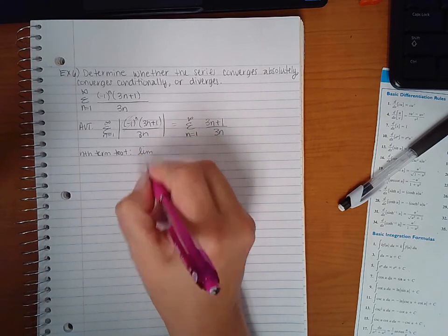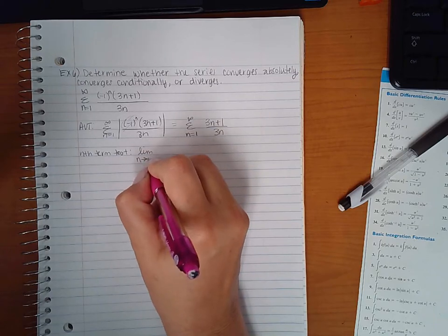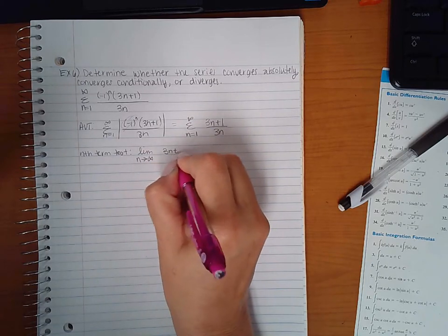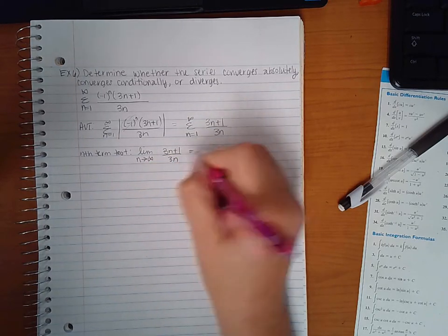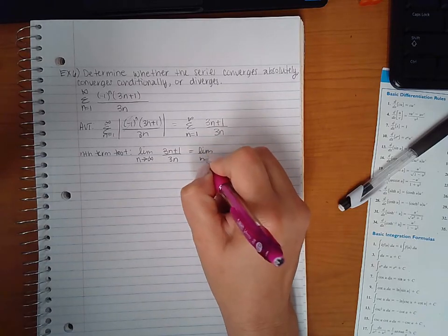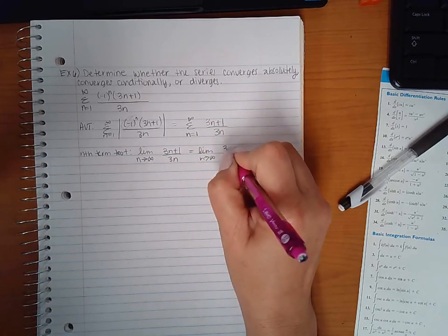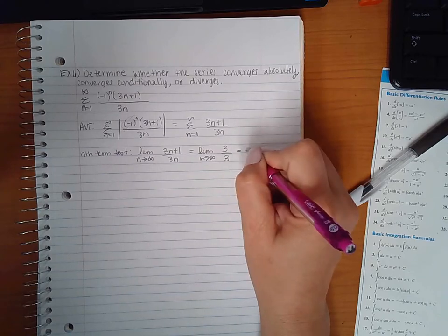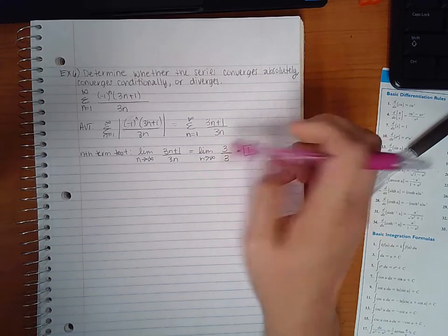So if I take the limit as my a_n goes to infinity, I can apply L'Hopital's rule, which means the derivative of the numerator is 3, derivative of the denominator is 3, which means this limit will equal 1.